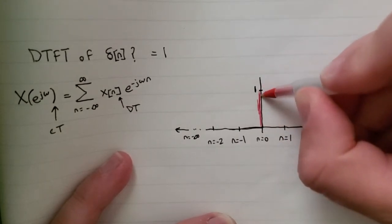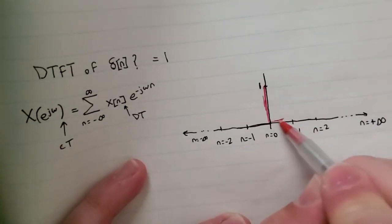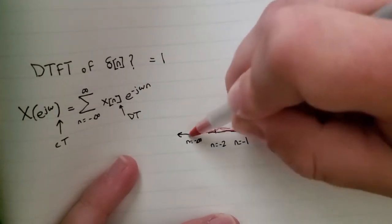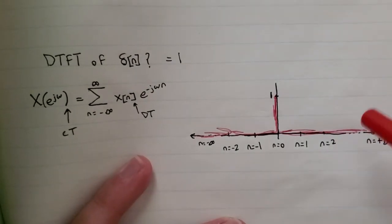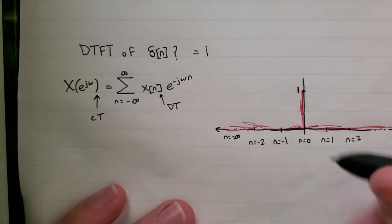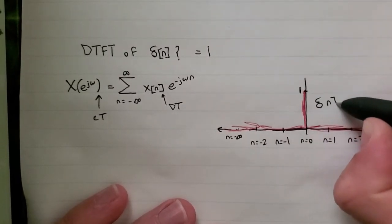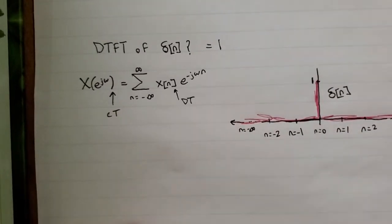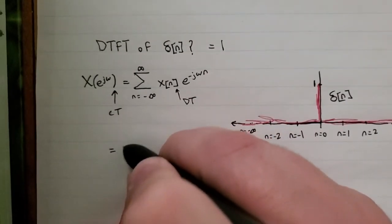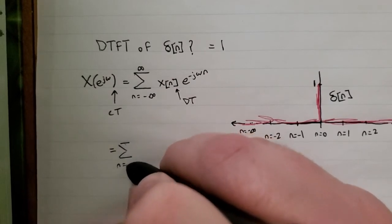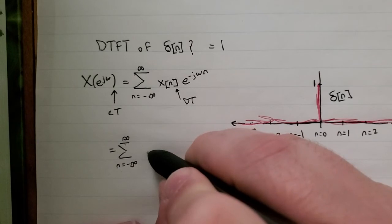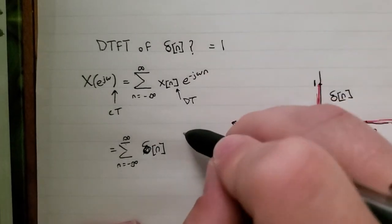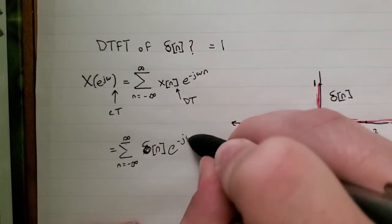Basically we can draw a line here and then it's just going to be zero all the way to positive infinity and all the way to negative infinity. That's a very poor drawing but you get what I'm trying to say. So that is the delta function. So if we say let's plug in our delta function for the DTFT: we have the sum from n equals negative infinity to infinity of delta[n] times e to the negative j omega n.